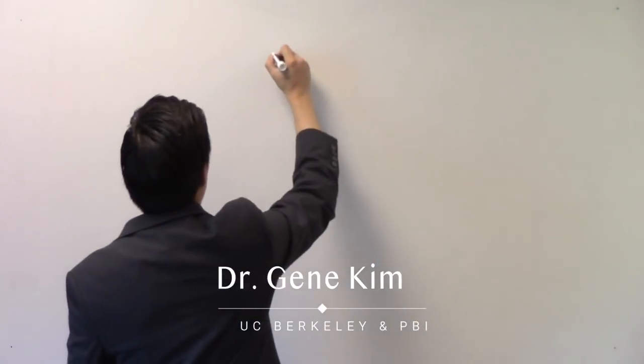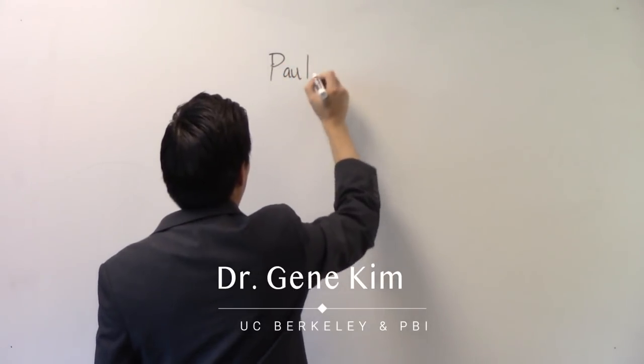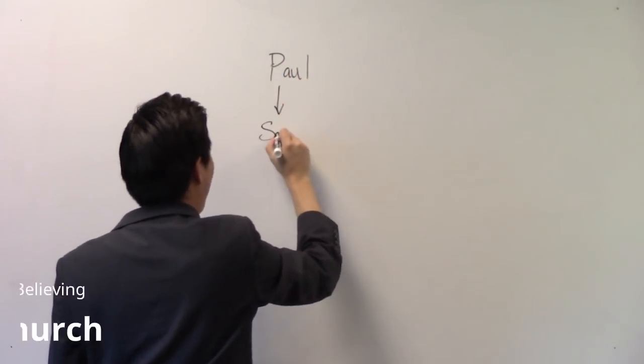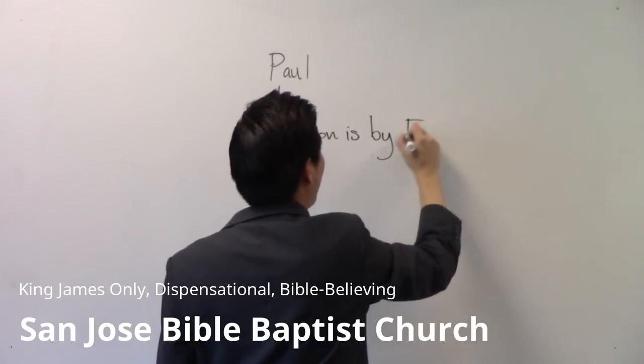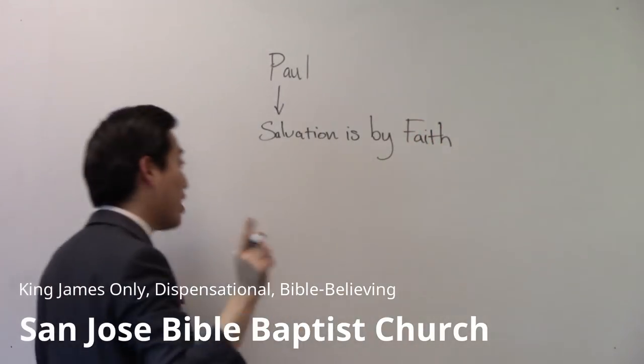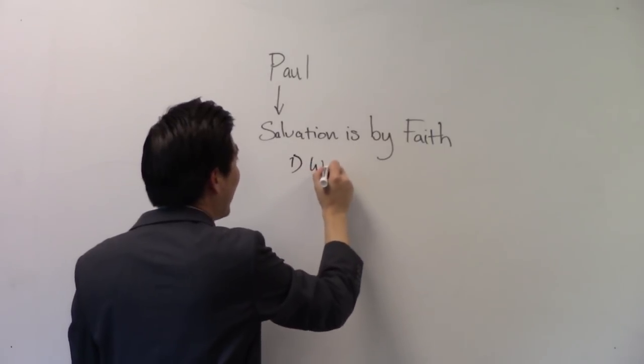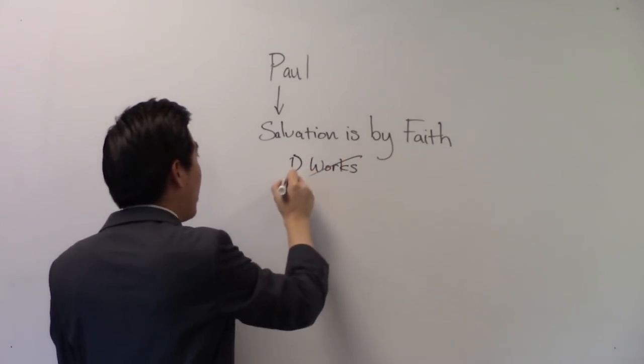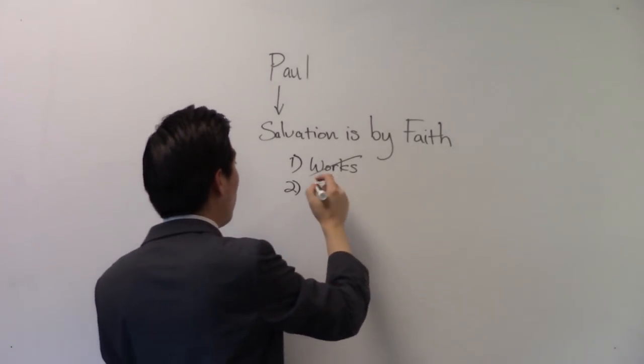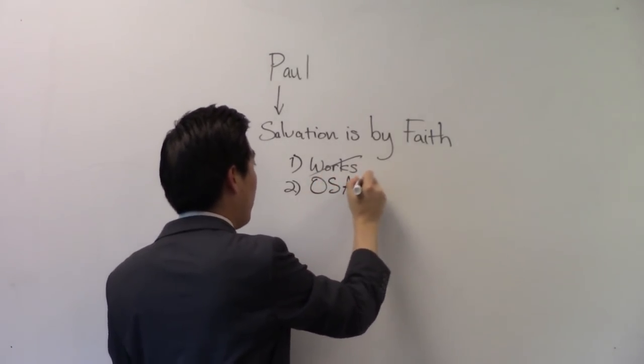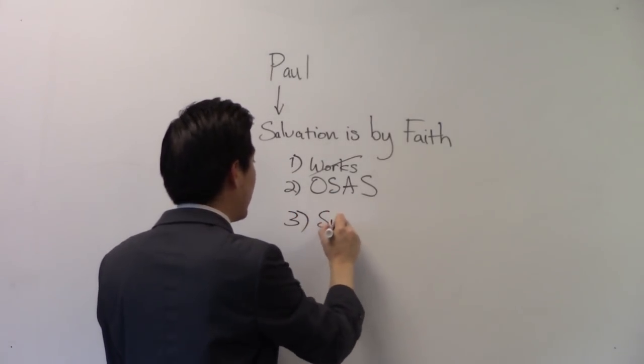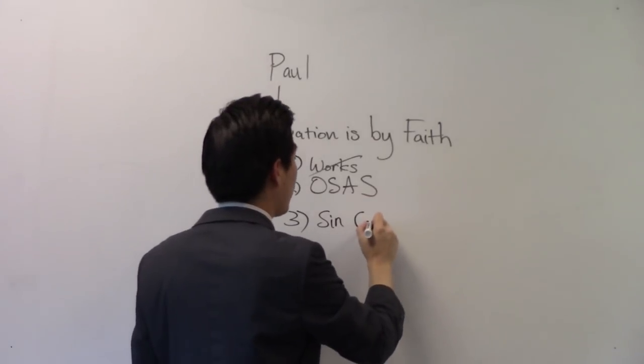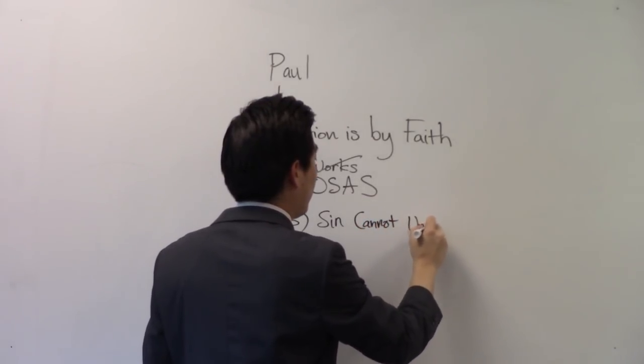So let's start off with Romans chapter 8. Paul taught a doctrine, and that is salvation by faith without works. And it means what it says. Once you're saved by faith, you're saved by faith. When you're saved by faith, it doesn't include works. If you're saved by faith, then once saved, always saved. If you're saved by faith, no matter what sin you commit, it will not undo your salvation. Sin cannot undo.